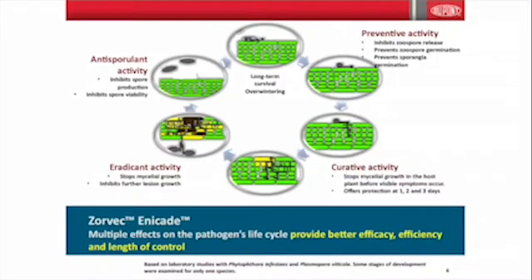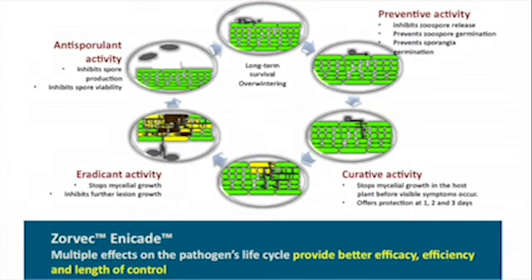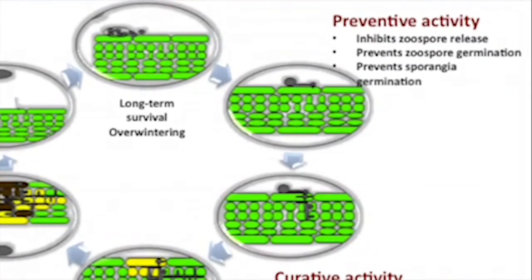We're also happy with the spectrum of crops on our first label. In terms of what it does, it has very good activity on the preventative side — stopping sporulation, inhibiting the production of spores, and affecting the viability of spores early on. It also inhibits zoospore release.